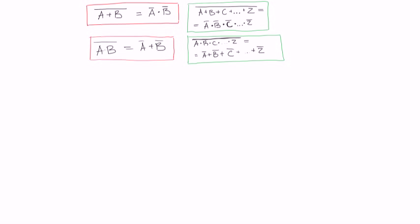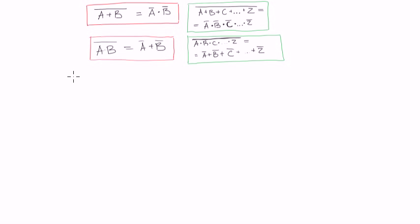Last time we solved some examples using De Morgan's theorem, but they had pretty direct implication of De Morgan's theorem. Now I want to simplify some other Boolean equations that will not have as direct an implication. Maybe they will be a bit harder. There is nothing harder in the whole course of Boolean algebra, but those were too easy. I want a bit more of a problem.